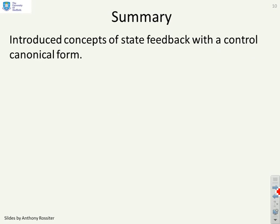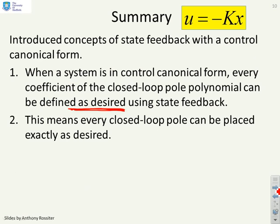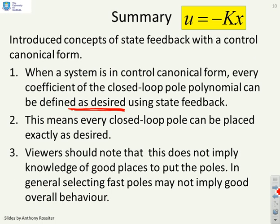In summary, when a system is in control canonical form, every coefficient of the closed-loop pole polynomial can be defined as desired, and all coefficients can be set independently and easily using state feedback. This means every closed-loop pole can be placed exactly where you want. However, an important warning: being able to place poles where you want is not the same as knowing where to place them — choosing the wrong pole locations may result in poor overall behaviour.